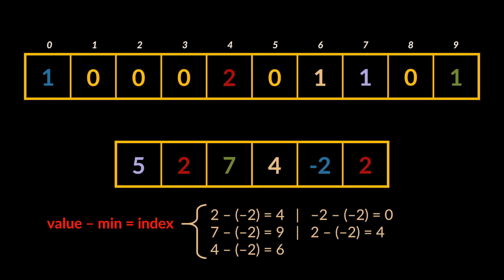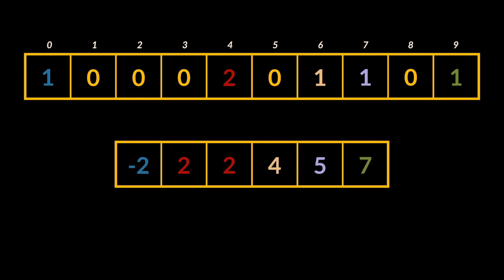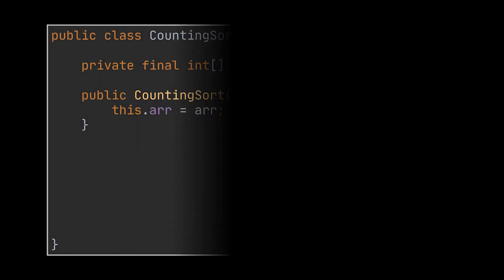This leads us to an array very similar to the one we had in the easier example at the beginning. After doing this, similarly to before, we have to iterate over the array holding the count for each of the integers to obtain our final sorted array. Now let's try to implement this sorting algorithm together.